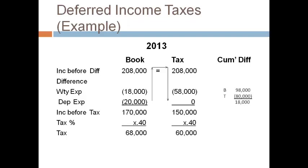Next, compute the cumulative book-tax difference for warranty expense. This is the second year, so the cumulative difference will include the first year and the second year. Warranty expense for books is $80,000 in 2012 plus $18,000 in 2013, or $98,000 cumulative reported on the income statement. Warranty deductions for tax were $22,000 in 2012 plus $58,000 in 2013 for a total of $80,000. The cumulative difference for 2013 is $18,000 — $98,000 on the income statement less $80,000 on the tax return for both years. For depreciation, the prior year cumulative difference was $120,000 more for tax, and the current year difference is $20,000 more for books, for a total net cumulative difference of $100,000.